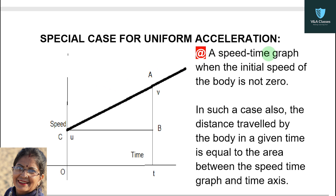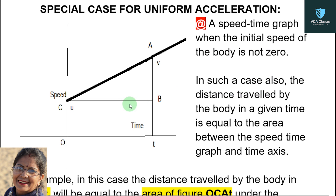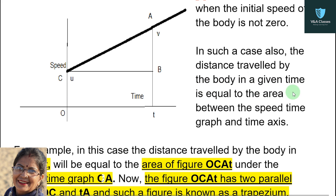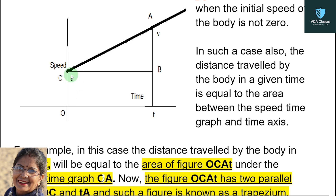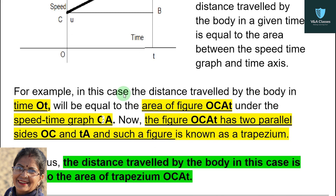Now a special case for uniform acceleration: a speed-time graph when the initial speed of the body is not zero. In such a case also, the distance travelled by the body in a given time is equal to the area between the speed-time graph and the time axis. For example, the distance travelled by the body in time OT will be equal to the area of figure OCAT under the speed-time graph CA.